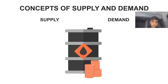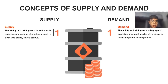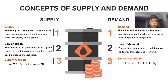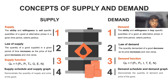Now we move to the concept of supply and demand. The first is the definition of supply and demand. The second is the law of supply and demand. The third is the supply and demand function. This is the determinant of supply and demand. The fourth is the supply schedule and supply curve, and also demand schedule and demand curve.